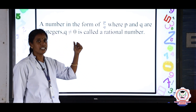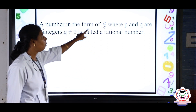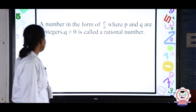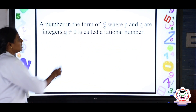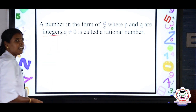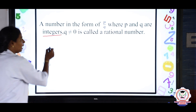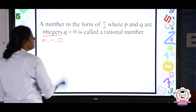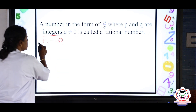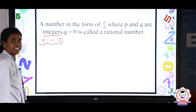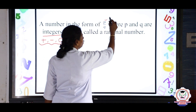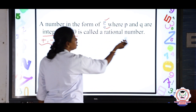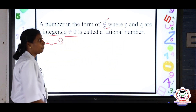First, we will see what is a rational number. A number in the form of P by Q, where P and Q are integers. Integers are nothing but negative numbers and positive numbers along with 0. This set of numbers is called integers. Here P and Q are integers, and Q is not equal to 0 — that is a rational number.